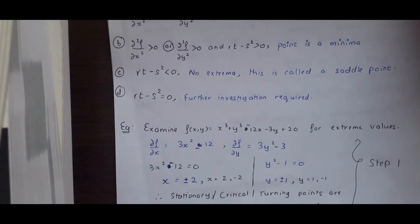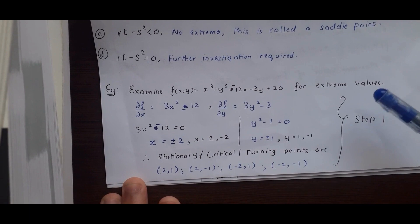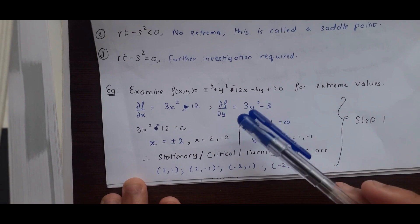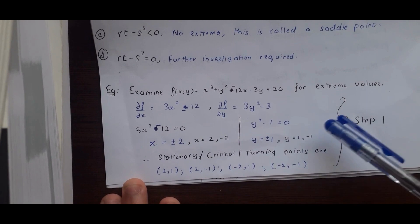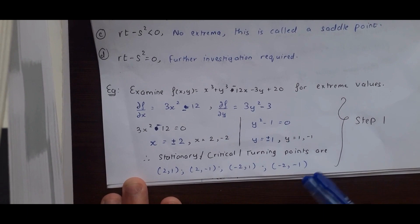Here's an example: examine the function x³ + y³ − 12x − 3y + 20 for extreme values. The first step is to take the first derivative with respect to x and with respect to y and equate to zero. On equating to zero we get x = ±2 and y = ±1. Using these, we have 4 combinations of coordinates: (2,1), (−2,1), (2,−1), (−2,−1). These are called stationary, critical, or turning points.